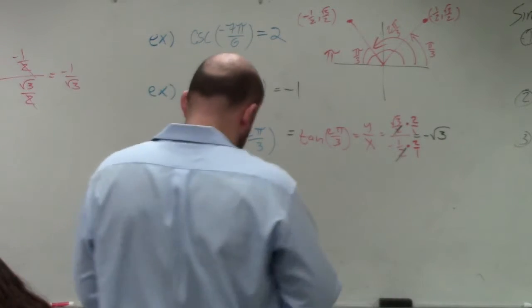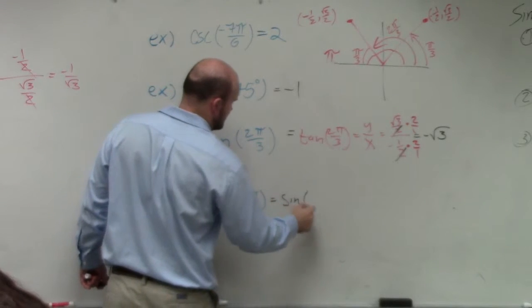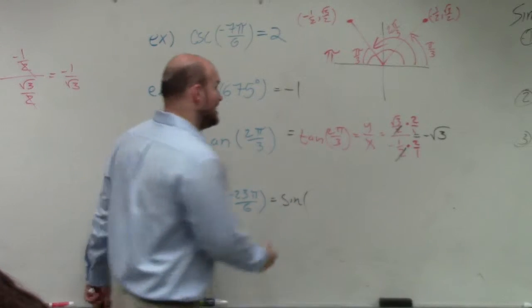All right, last example. Using period of an aid, I can quickly rewrite this. This is greater than 2 pi and it's also negative.